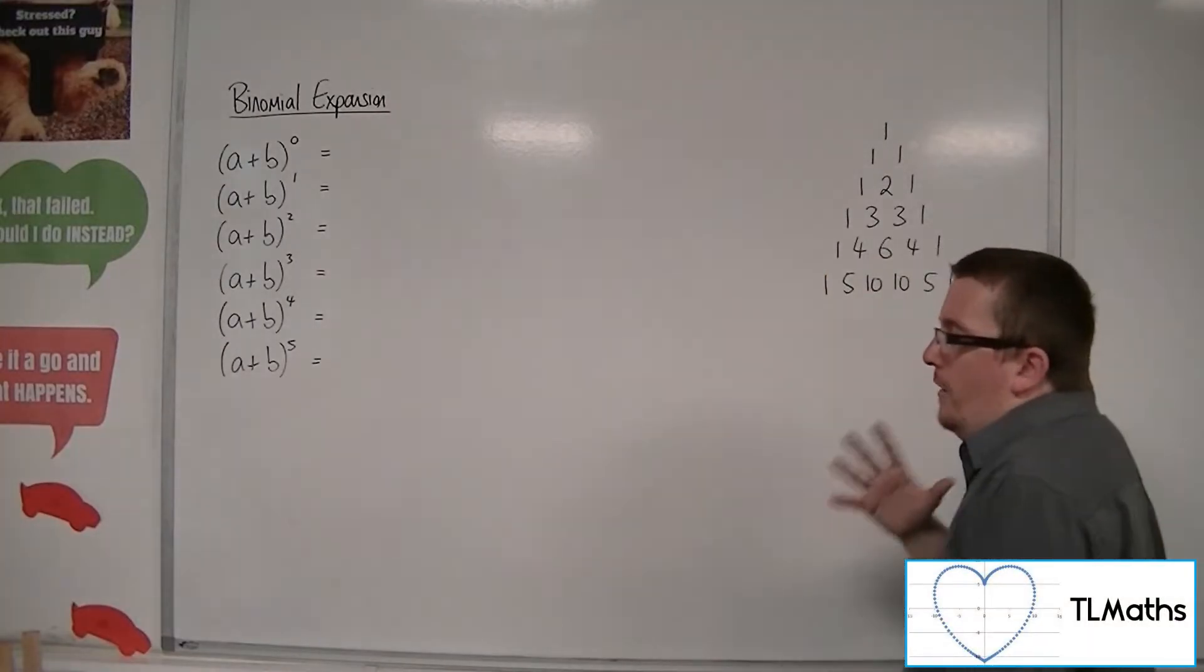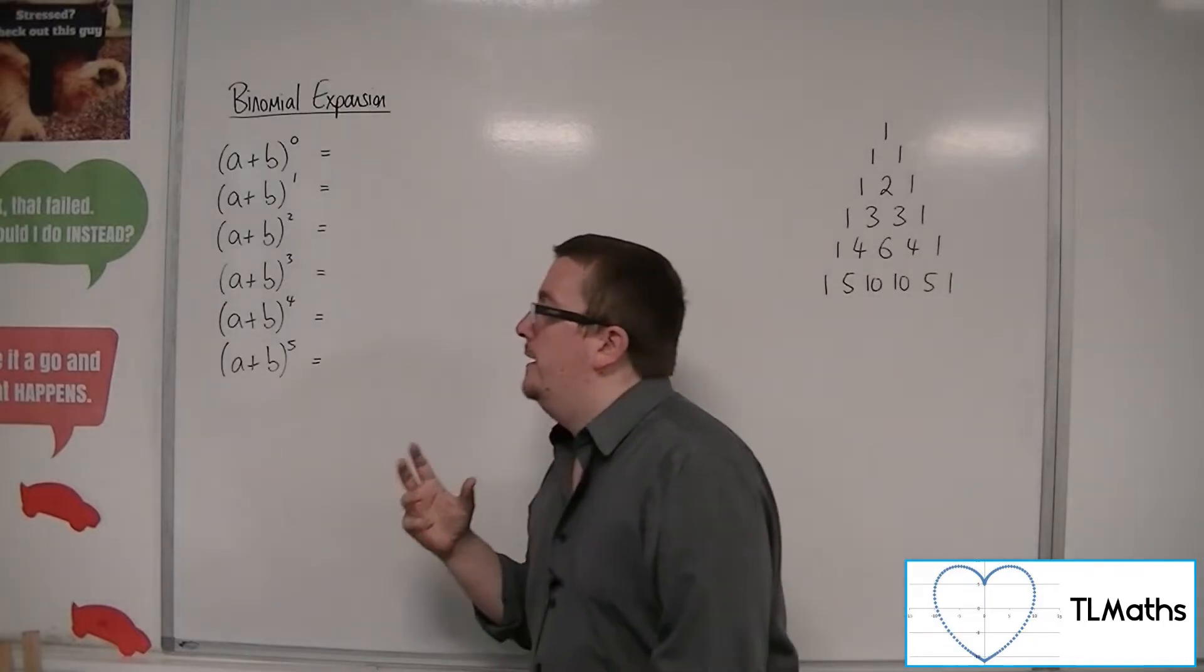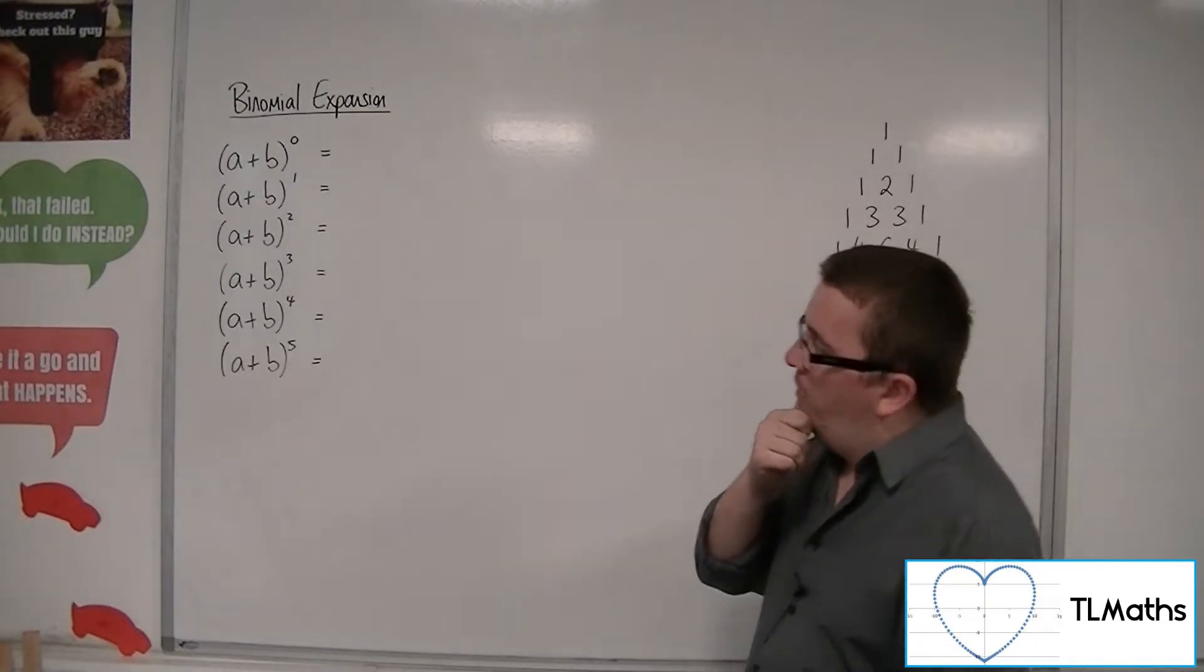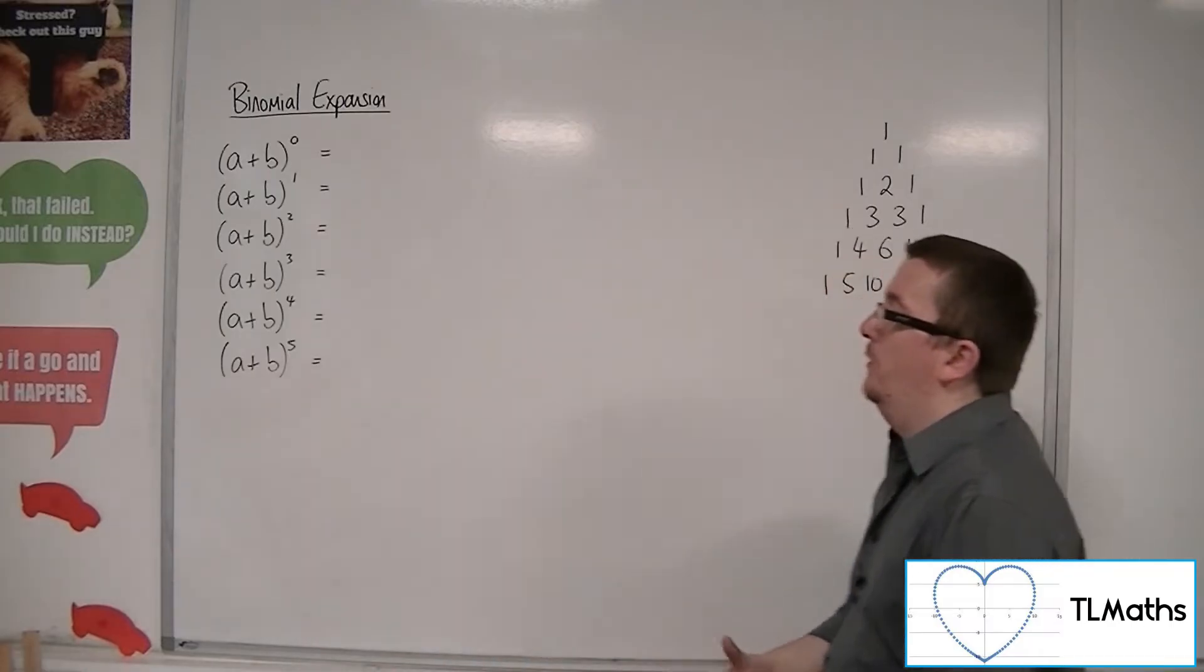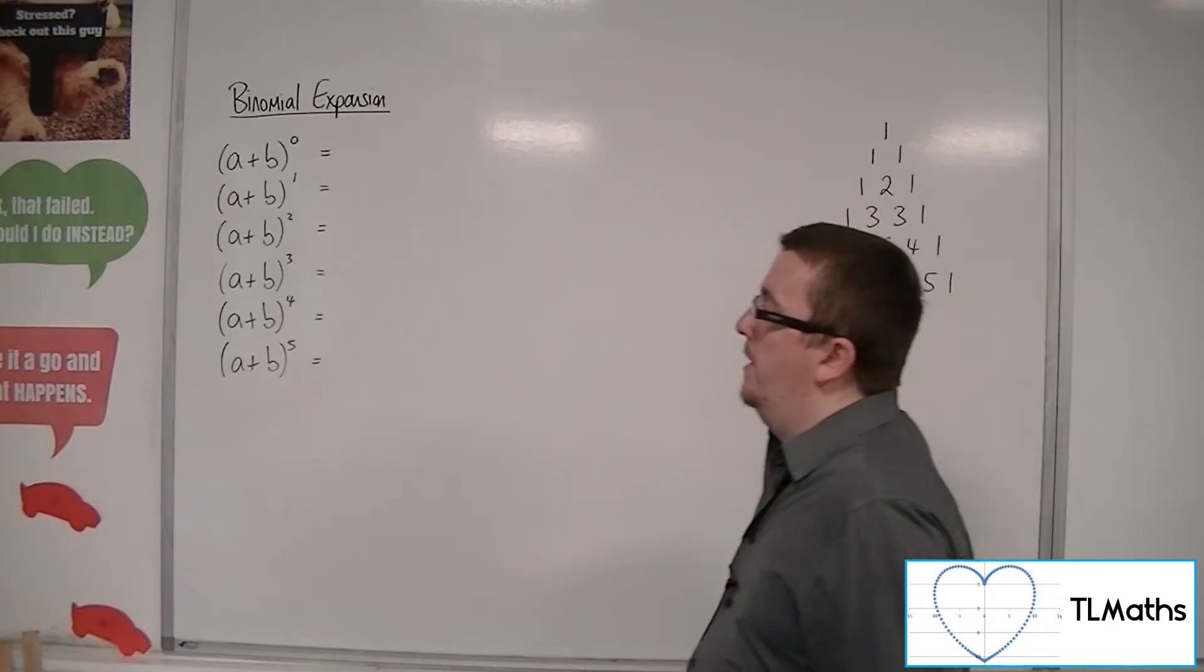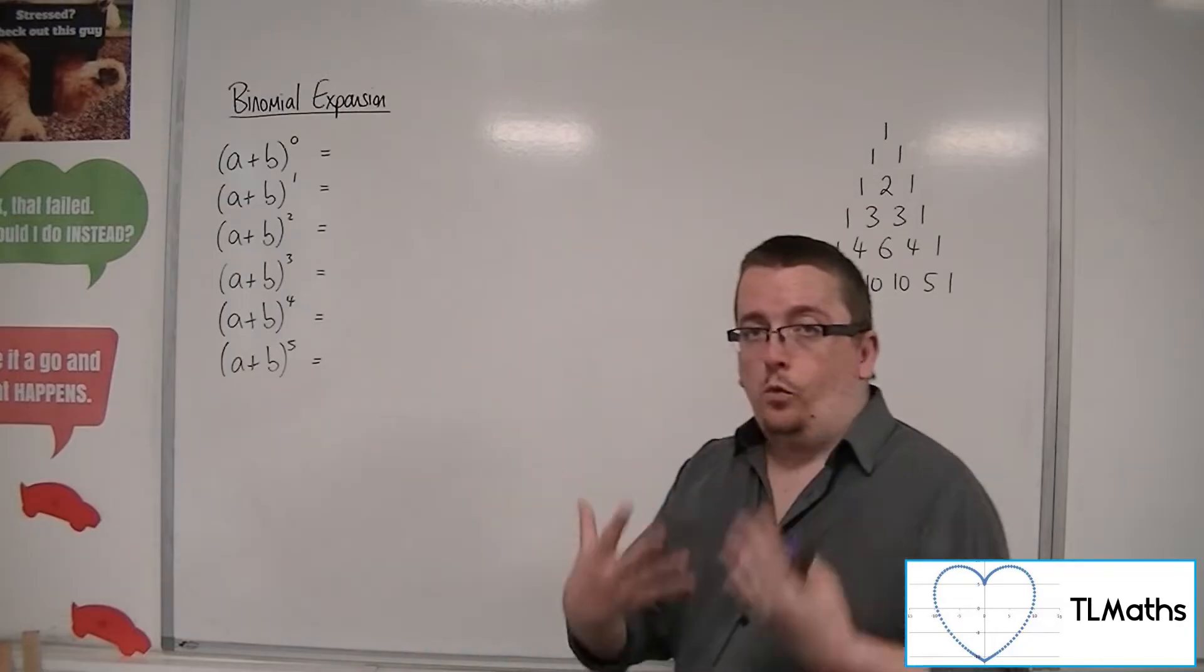Now we're trying to see, are there any other patterns that we could see? So if we've got two things being added together within a bracket, and we've got the power of a whole number, then what do we get?